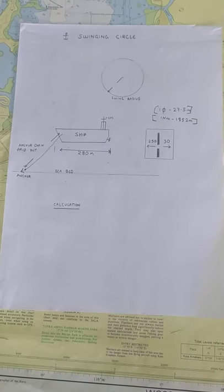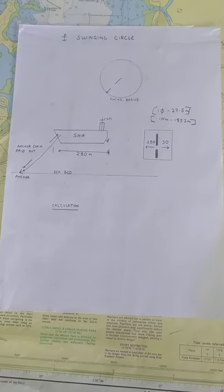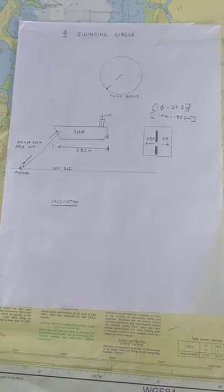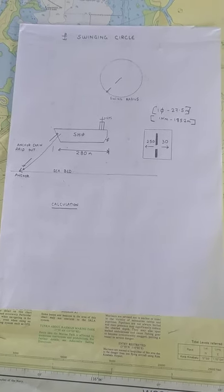Good afternoon. Today we will learn about swinging circle. Swinging circle is the radius around which your ship will be swinging when she is at anchor.